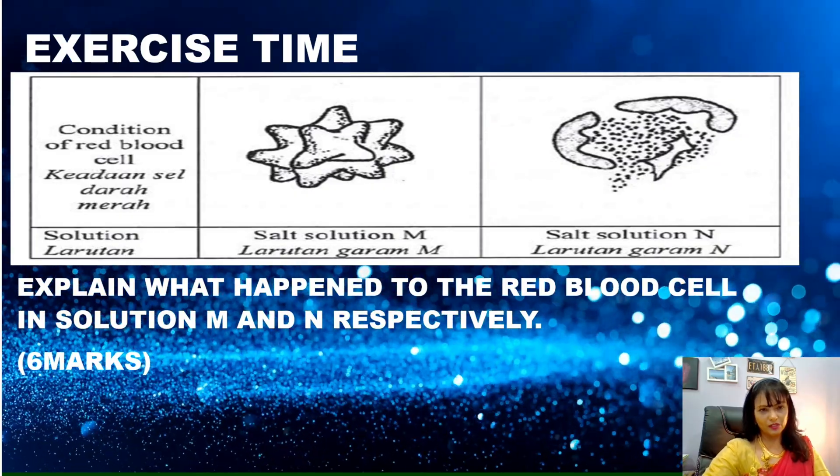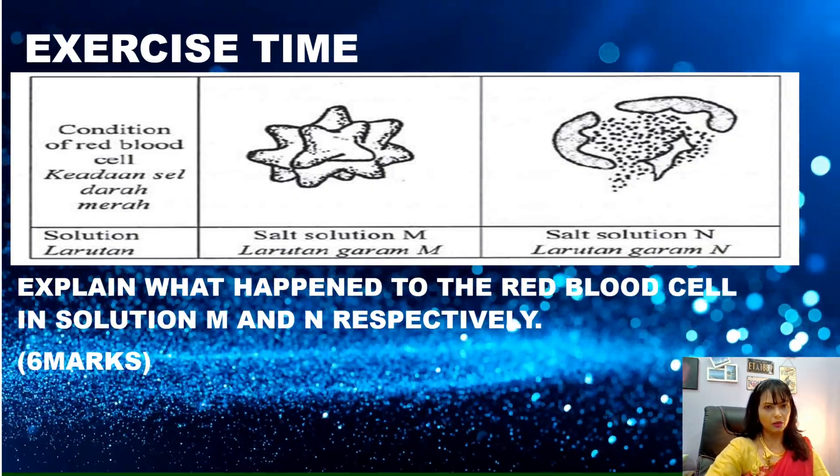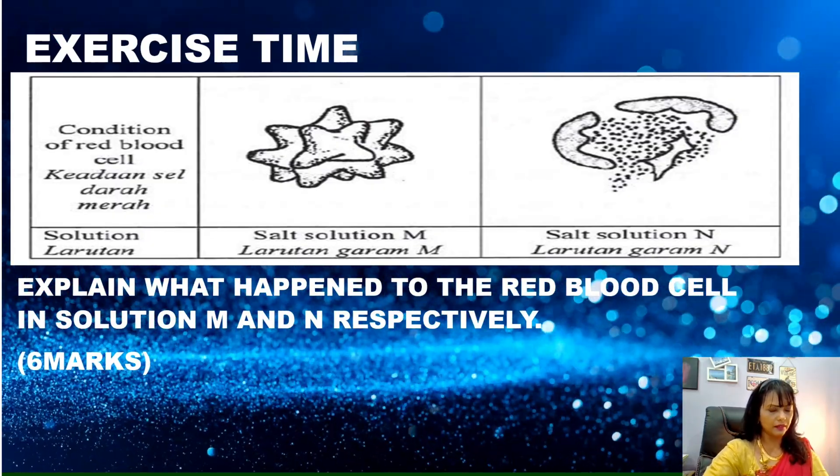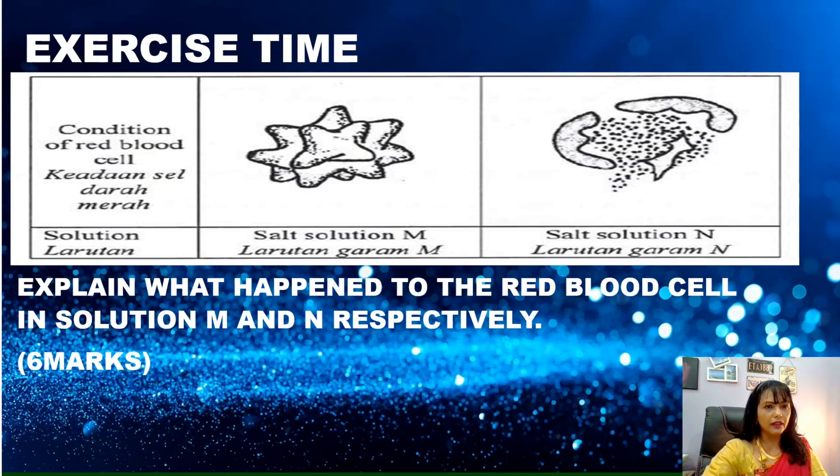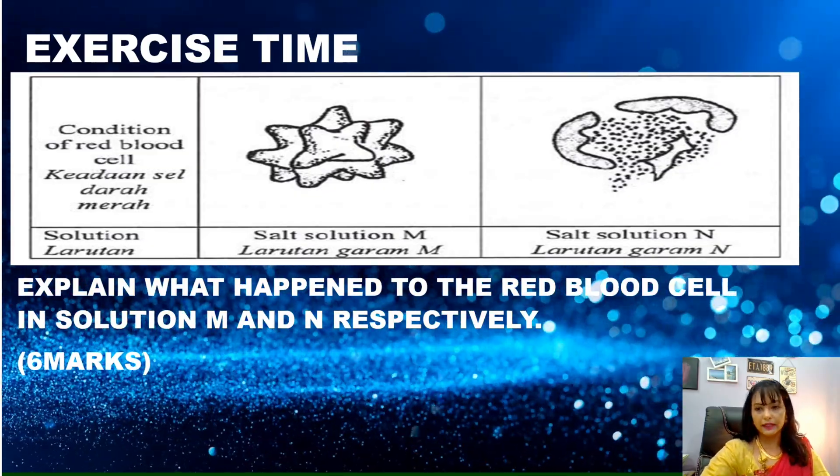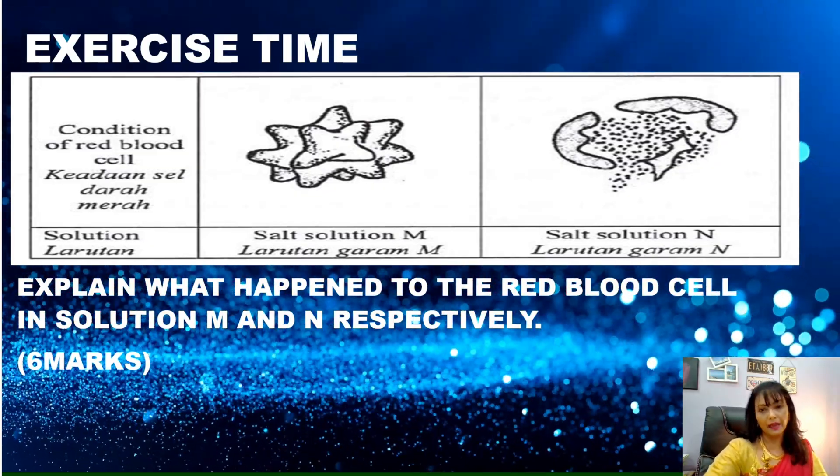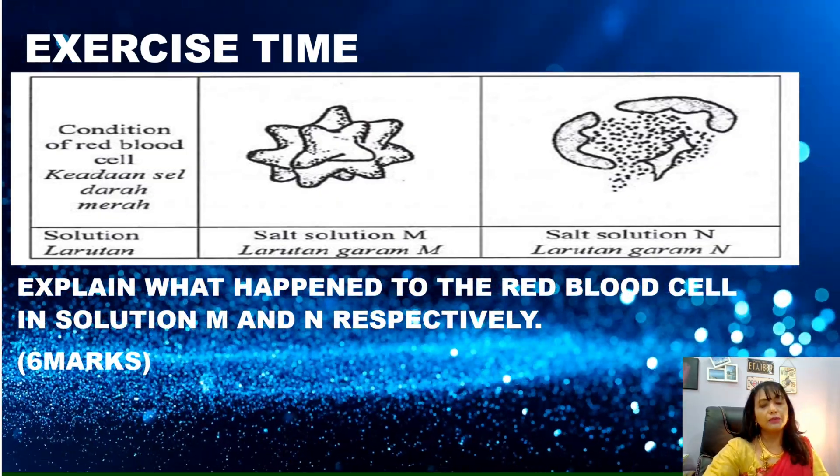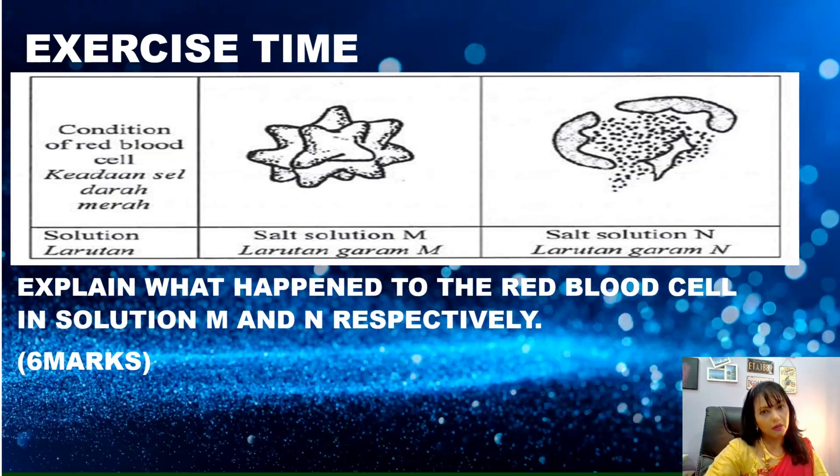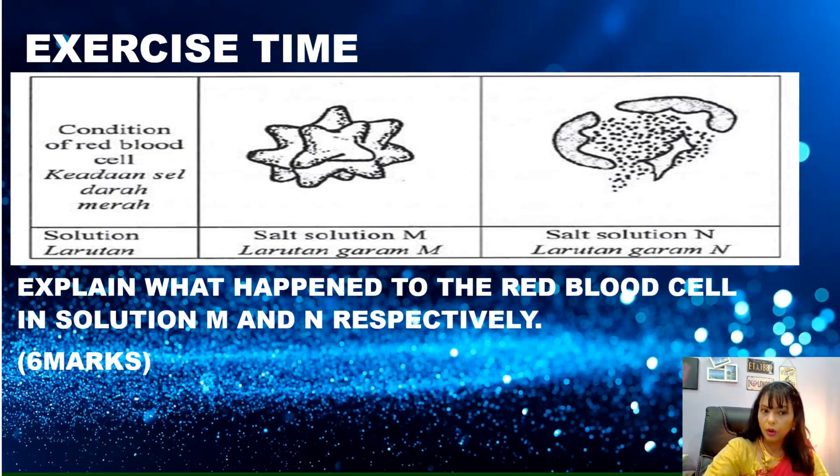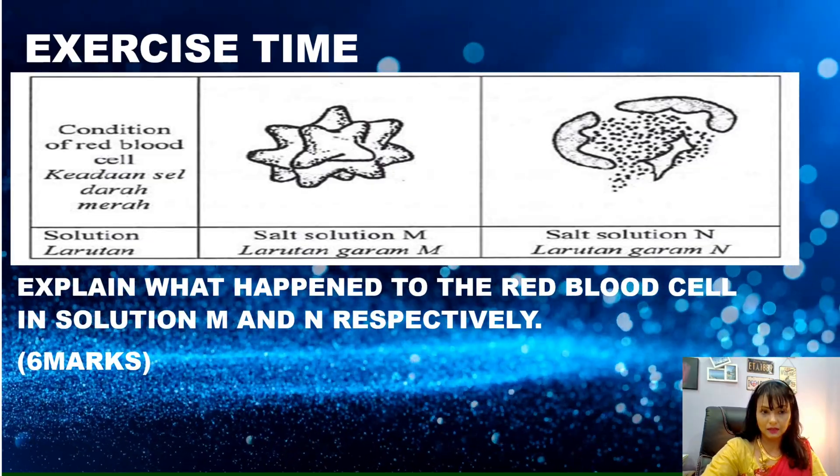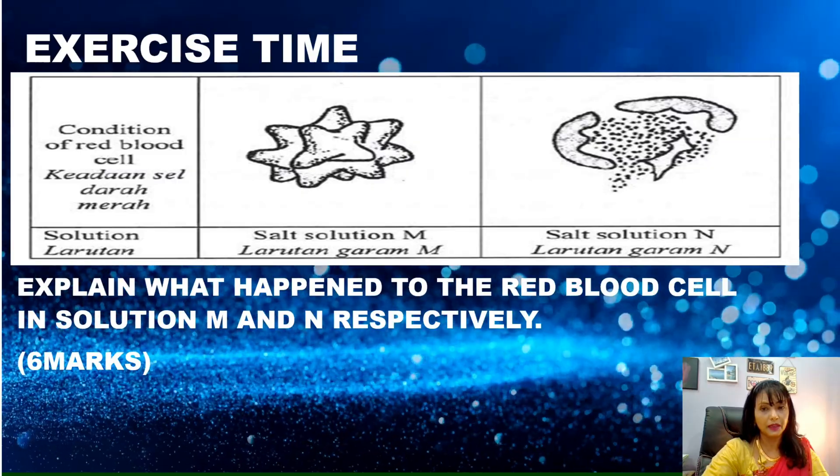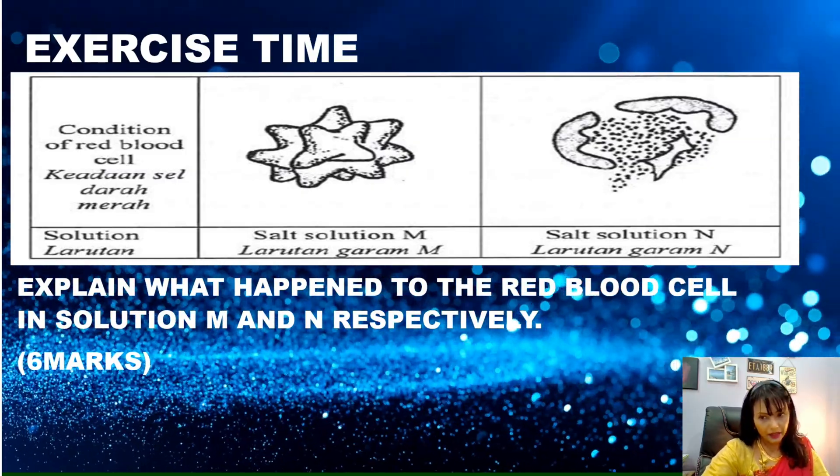Of course, my video will be having some exercise time. Don't think I'm going to let you off the hook without any exercise. All right? Okay, so let's get to the exercise today. So, explain what happened to the red blood cell in solution M and N respectively. Remember, there's no magic here. I'm just going to apply all the elements that I taught you so far to obtain all the six marks that's stated here. This is a very, very common SPM question that you may get. So, let's try this.